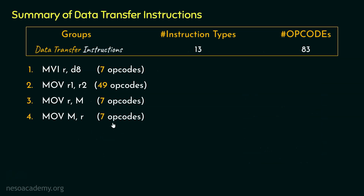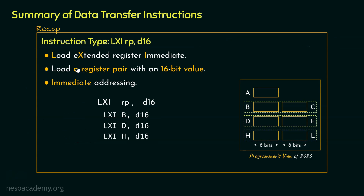The fifth instruction type is LXI RP, D16. The mnemonic LXI stands for Load Extended Register Immediate. Within the instruction itself we send 16-bit data, making it an immediate addressing mode instruction. In this type we studied three different instructions, so with this type we covered three more opcodes.